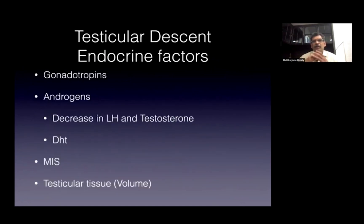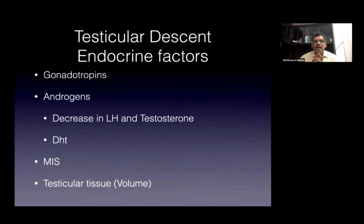There have been a lot of endocrine investigations done to find the etiological cause. People have looked at gonadotropins, androgens, decrease in LH, and the lack of the LH surge in mini-puberty in the first two months of life. They also looked at dihydrotestosterone, MIS, and testicular tissue volume. The tissue volume is smaller and there is a significant increase in undescended testes.